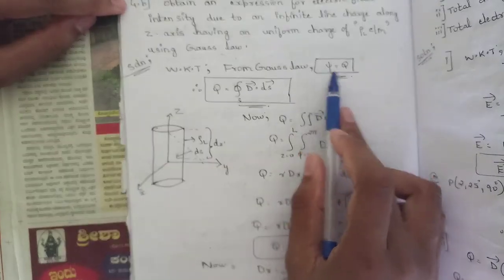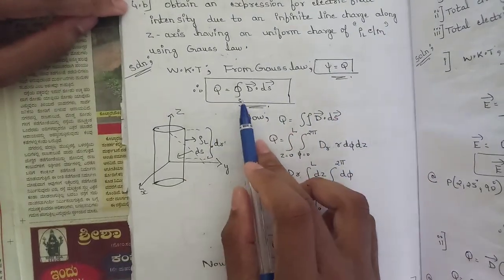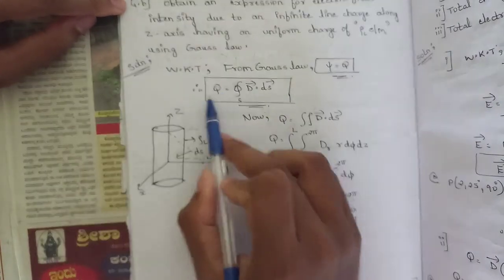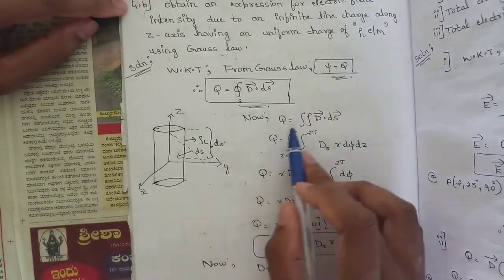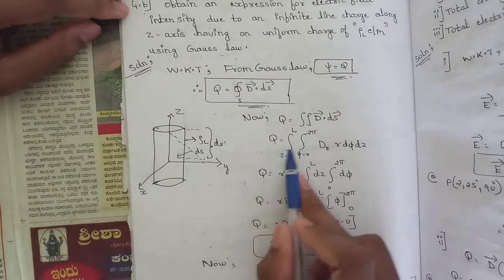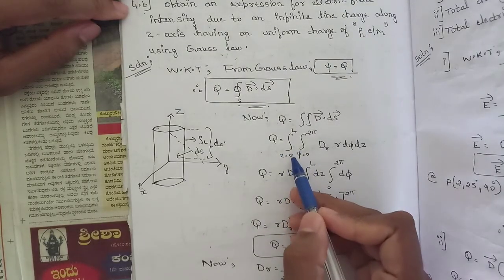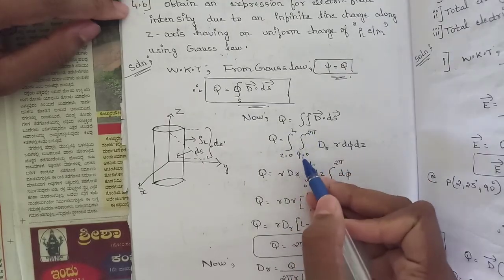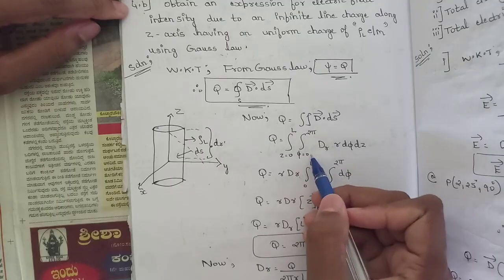From Gauss's law, ψ equals Q, and ψ equals the surface integral of D dot dS. So Q equals the surface integral of D dot dS. Substituting the limits: z ranges from 0 to L, and the phi angle ranges from 0 to 2π.